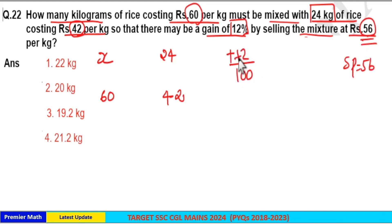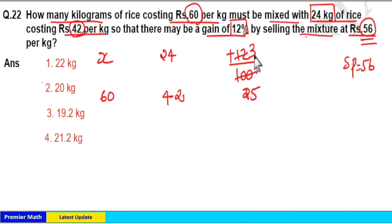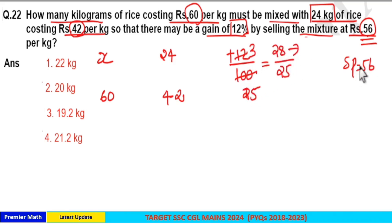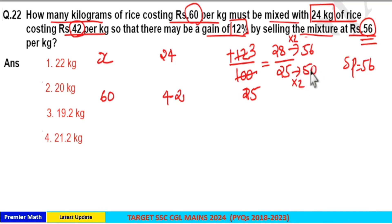A 12 percentage gain means: 4 goes 3 times into 12, and 25 times into 100. So 25 parts is the cost price and 3 parts is the gain, giving 25 + 3 = 28 parts as the sell price. Since the sell price is given as ₹56, and 28 × 2 = 56, then 25 × 2 = 50. So the cost price of the mixture should be ₹50.